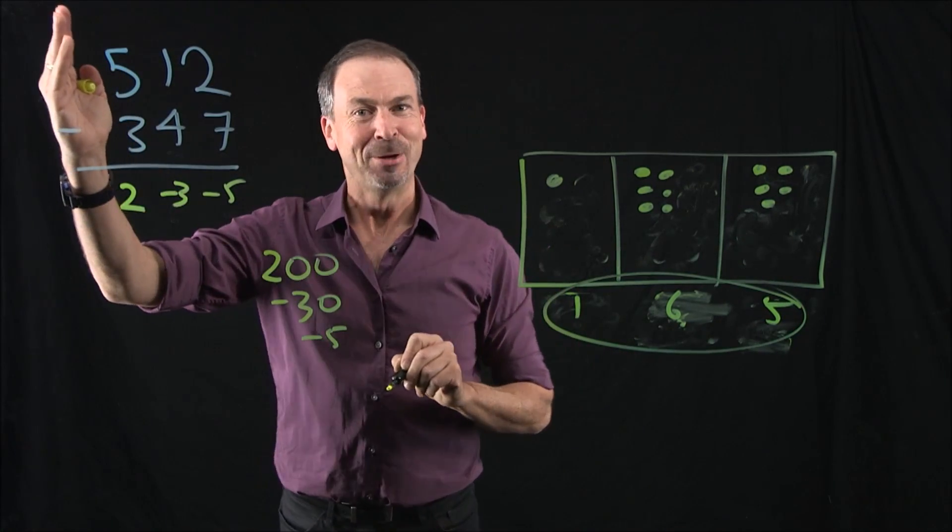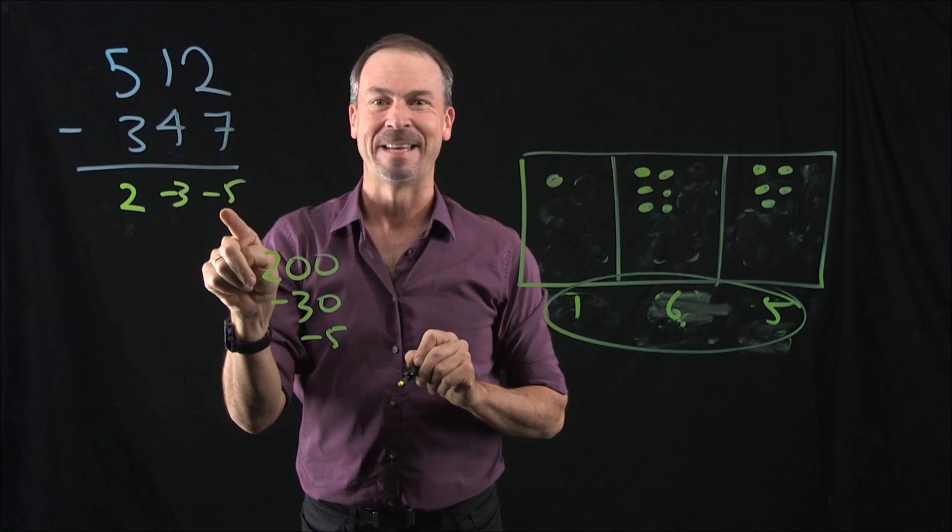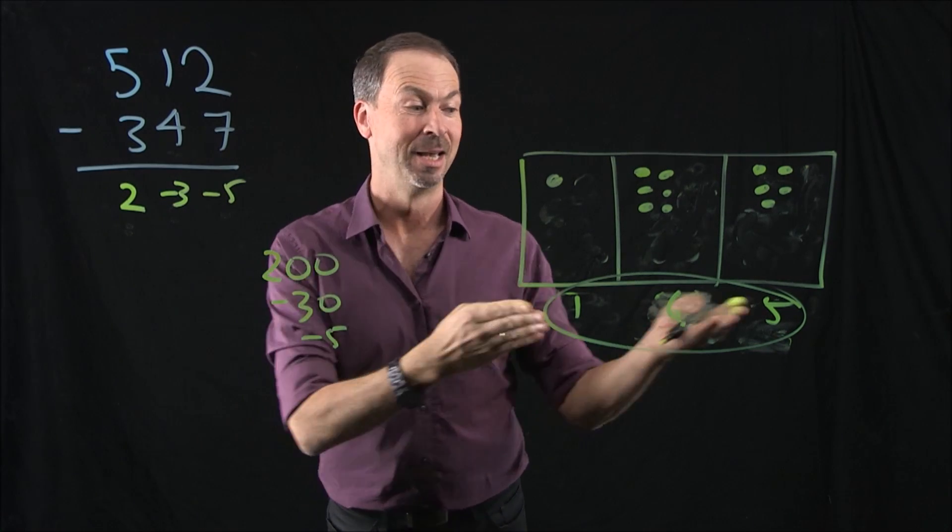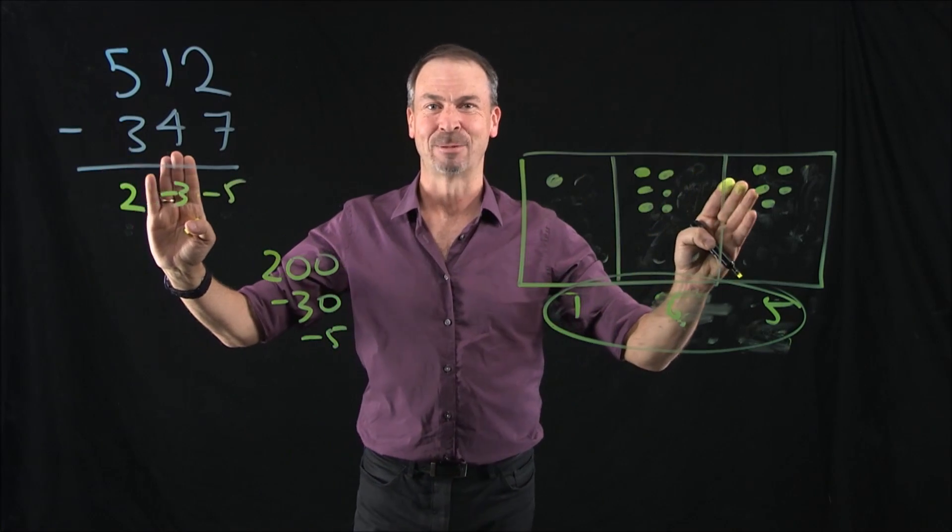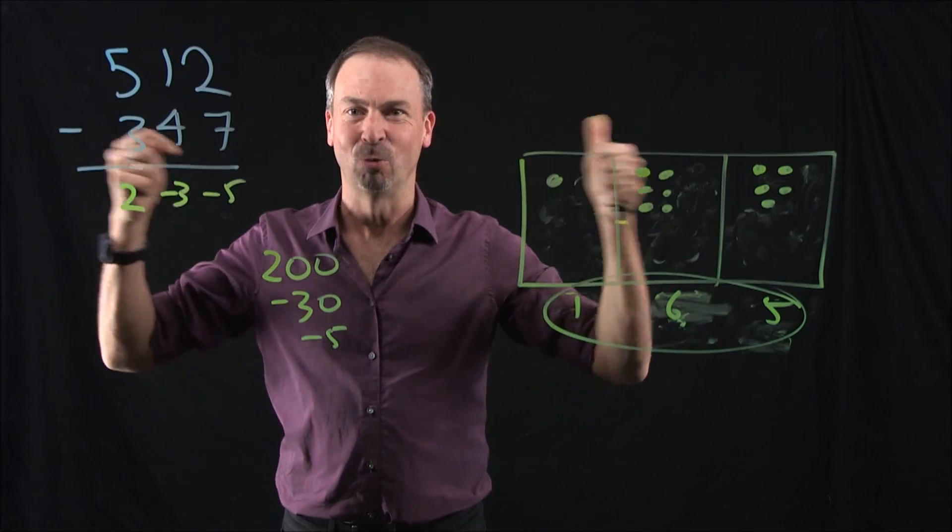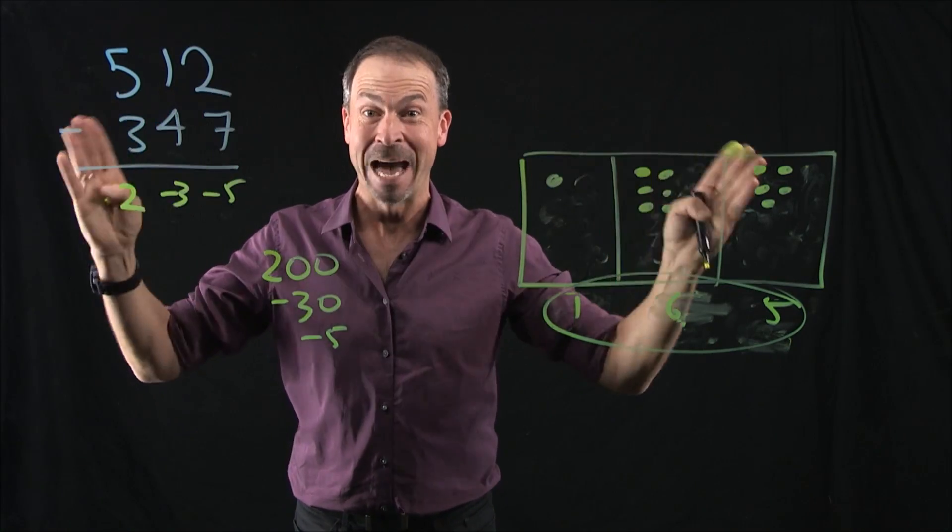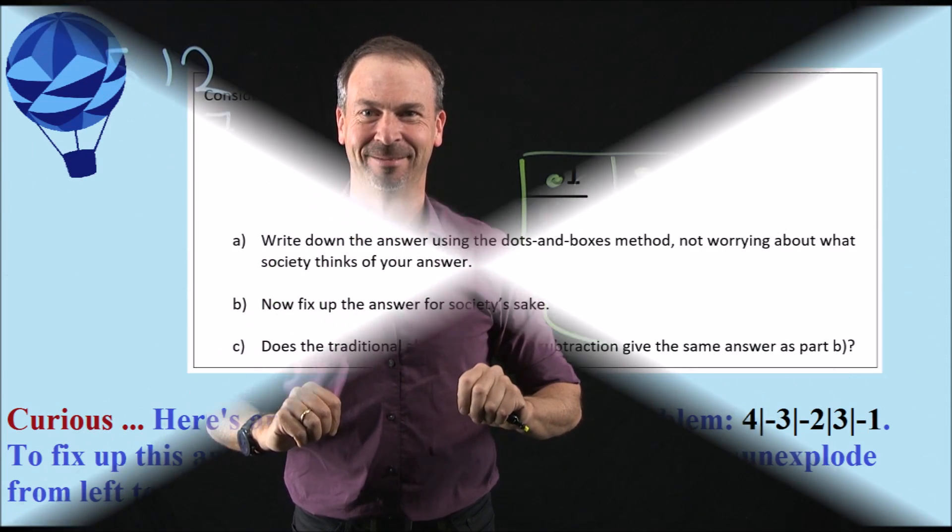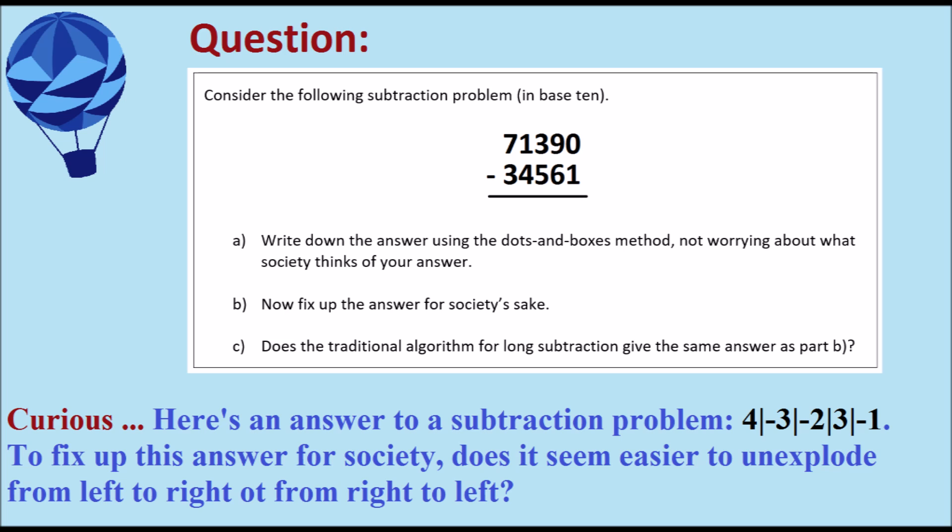So maybe there's something good about this algorithm. Go left to right, write down the answer. It looks crazy for society, but actually it's pretty swift to work out what that answer is in society's language. Brilliant. Love subtraction this way. Now I think we're on to something really cool. Antidots, grand. Unexplosions, grand. What power do we now have? Well, let's make good use of it as we carry on with this story. Thank you.